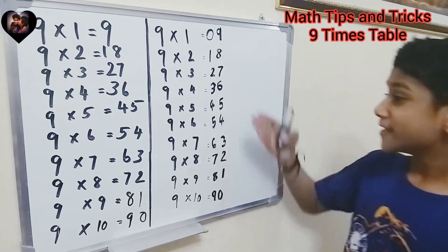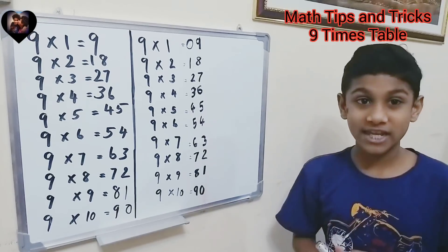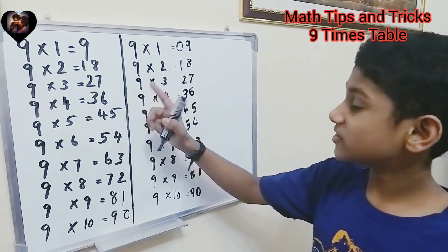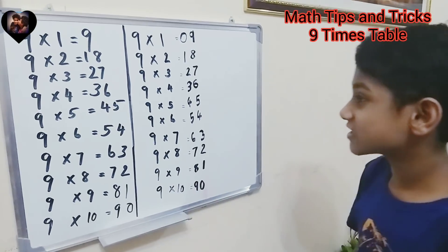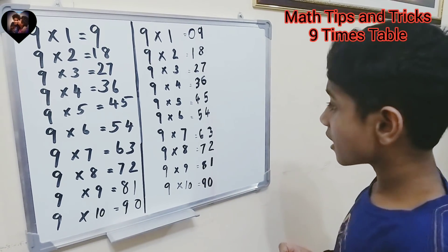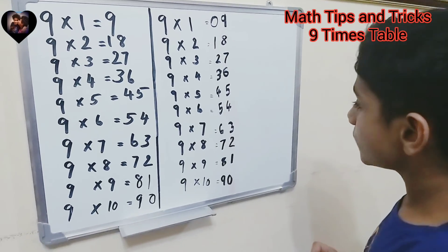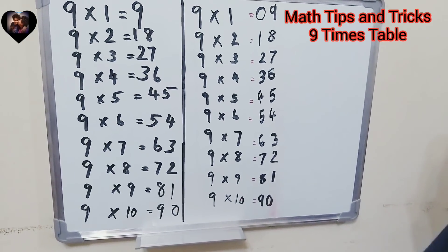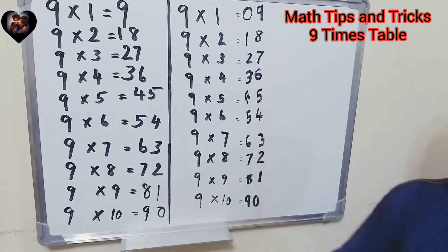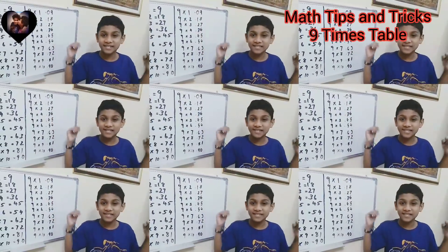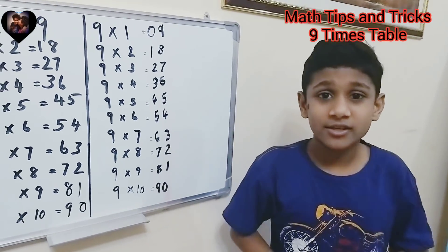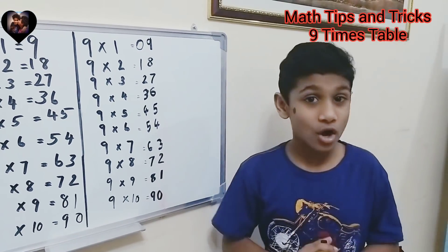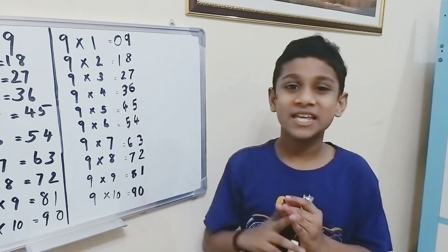All the answers are perfect! You can check: nine times one is nine, nine times two is eighteen, nine times three is twenty-seven, nine times four is thirty-six, nine times five is forty-five, nine times six is fifty-four, nine times seven is sixty-three, nine times eight is seventy-two, nine times nine is eighty-one, and nine times ten is ninety. Hope you guys enjoy this video — if I find more times table tricks I'll share them with you. Peace!